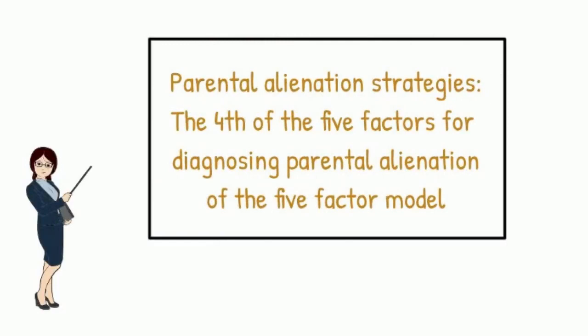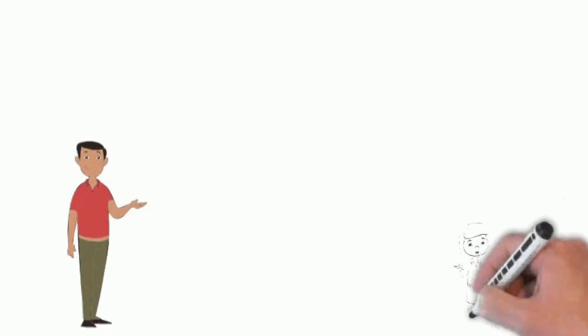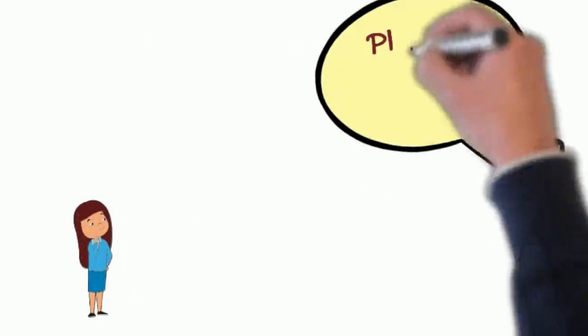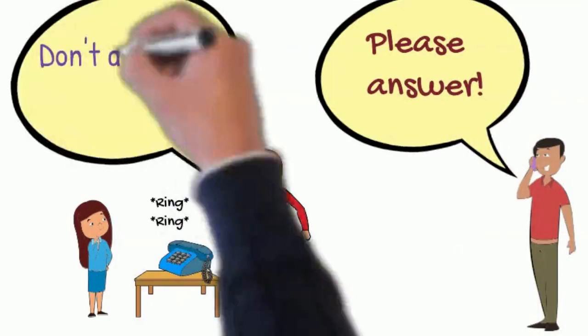The strategies are referring to targeted parent by the first name. Bad mouthing. Creating an environment in which the child doesn't feel free to display photos of, talk about, or engage in activities with the targeted parent. Interfering with communication. Limiting contact. Telling the child the target parent doesn't love him or her. Creating the impression that the targeted parent is dangerous.